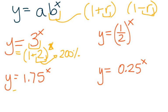If we wanted to rewrite this base over here, we could rewrite it as 1 plus 0.75 to the x. That means we are adding 75% of a quantity to itself every time. It's growing by 75%.